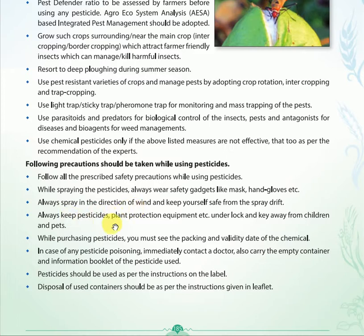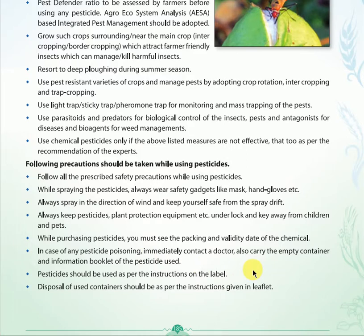Always keep pesticides and plant protection equipment under lock and key, away from children. While purchasing pesticides, you must check the packing and validated date of the chemical — this is most important. In case of any pesticide poisoning, immediately contact a doctor and carry the empty container and information booklet of the pesticide.